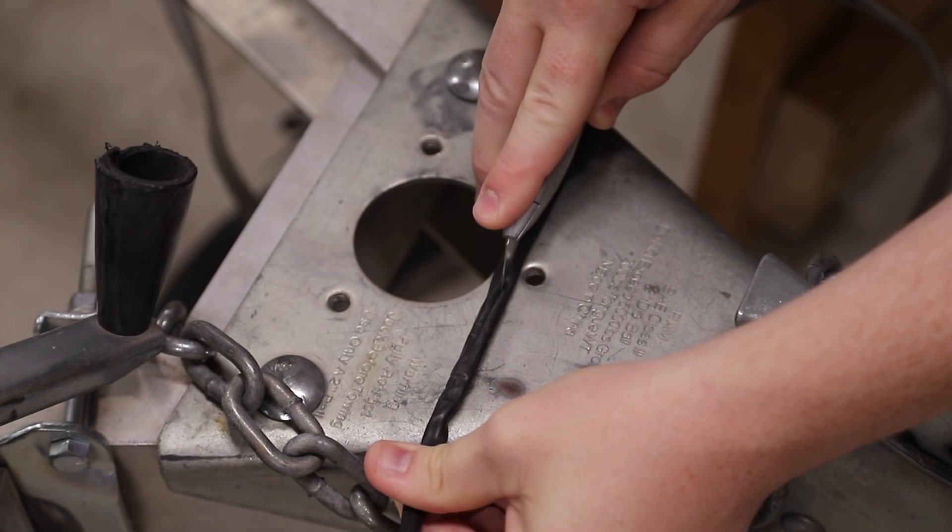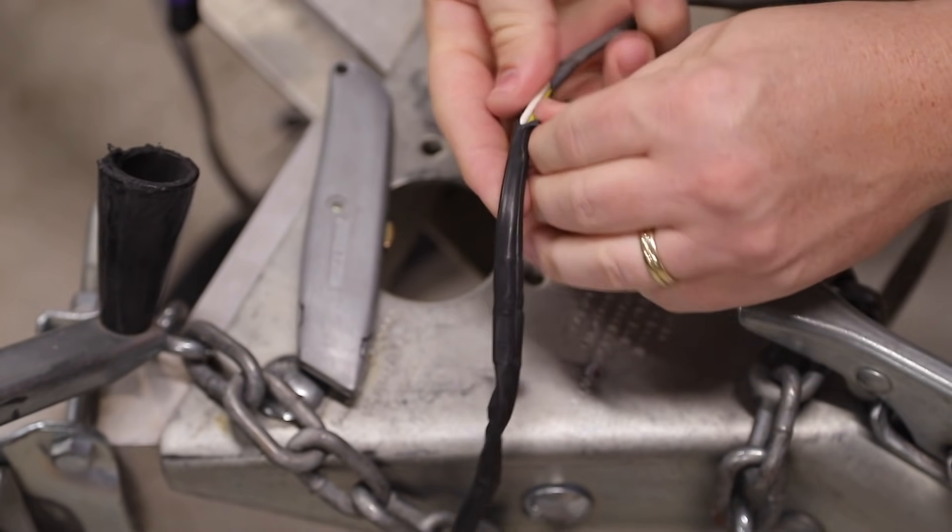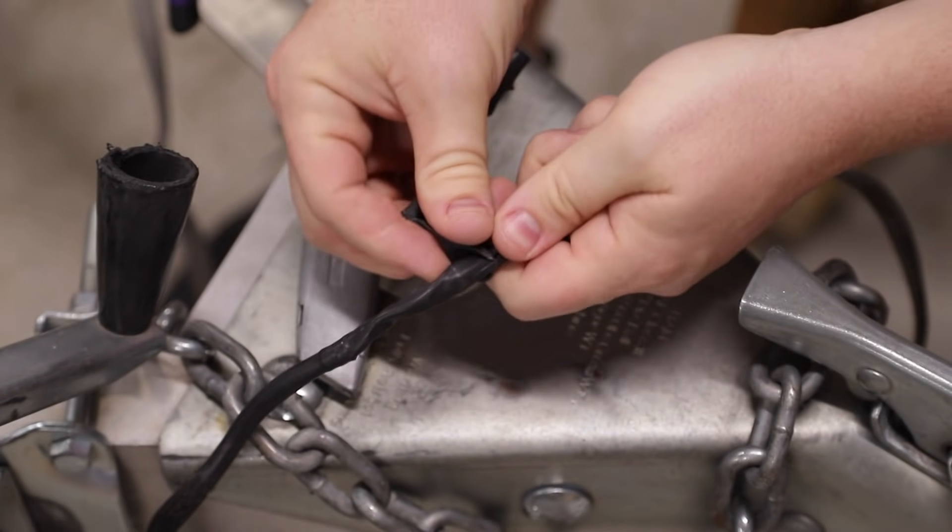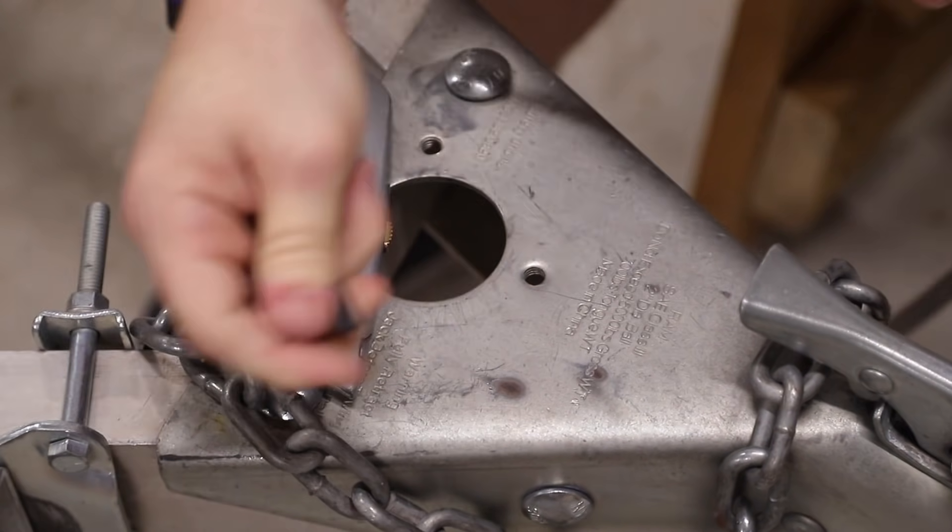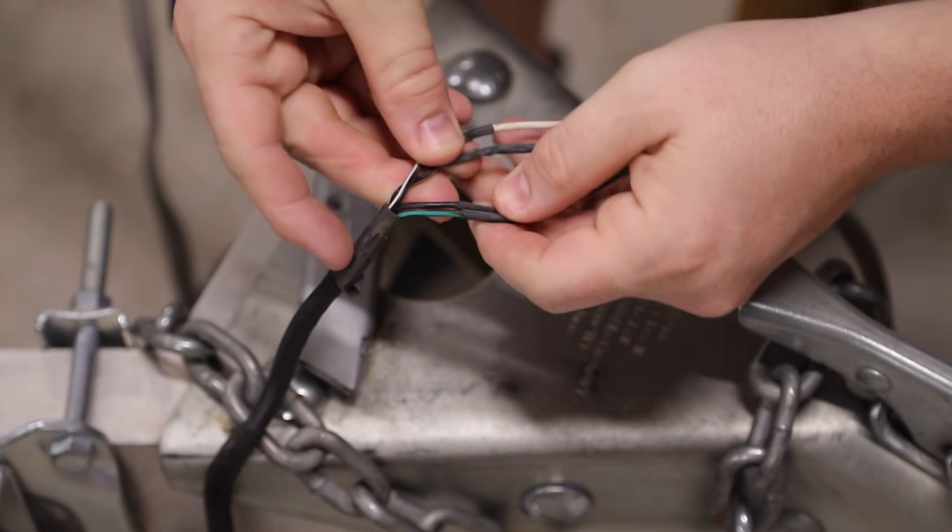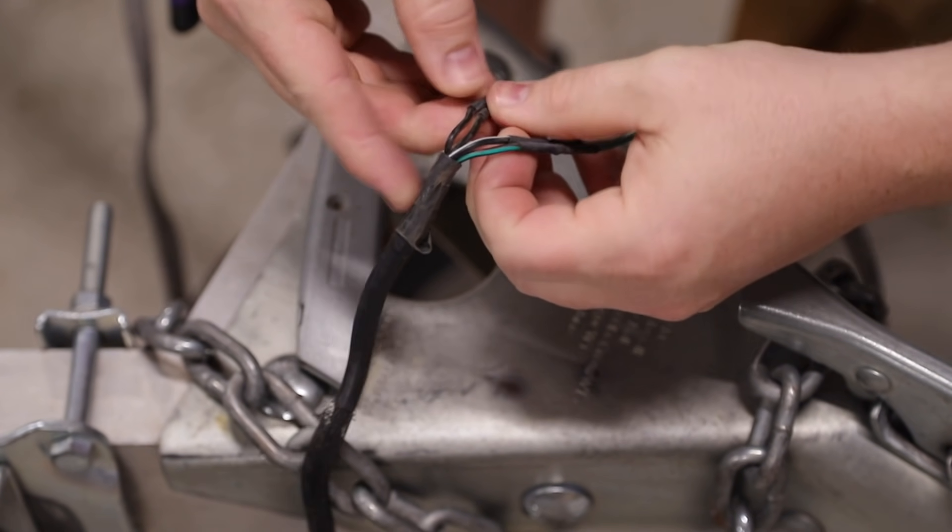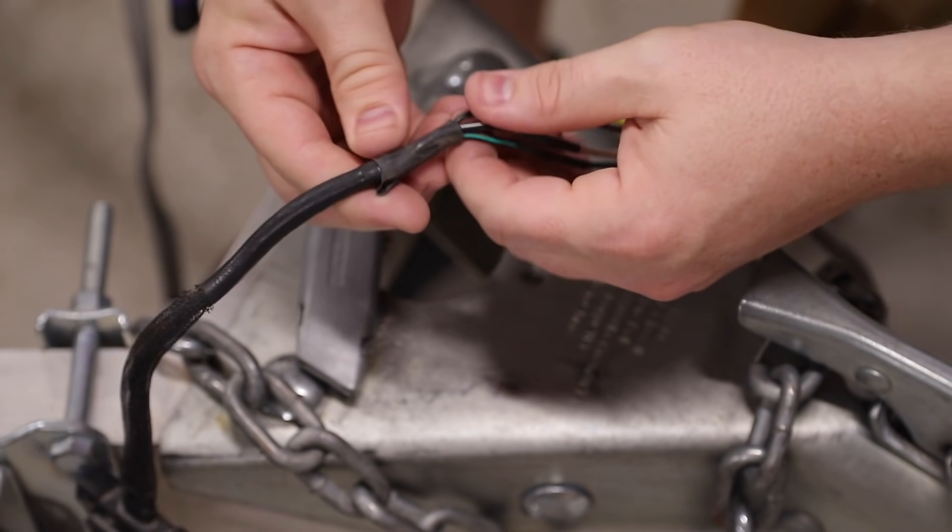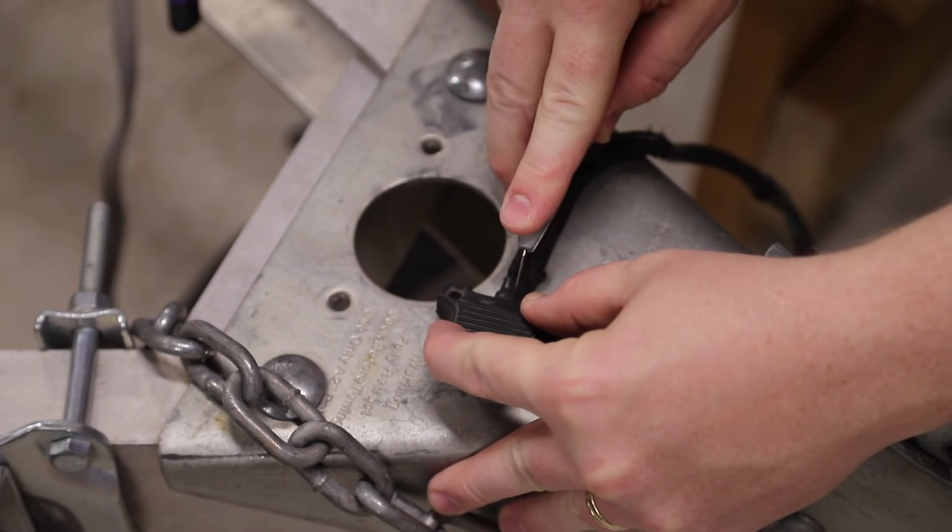I'm going to start by peeling back the existing heat shrink that was around the old adapter here, and I'm going to pull that back far enough so that I can see what color wires it has inside. It looks like I've got a green, a brown, a yellow, and a white. And I've never done one of these before, so I'm going to go ahead and peel back near the connector itself.